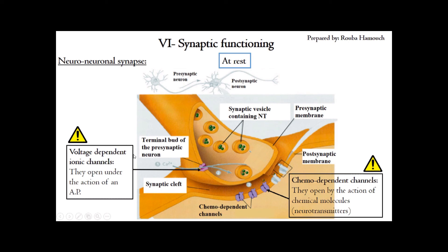We have voltage-dependent ionic channels — mainly Ca²⁺ ion channels — in the pre-synaptic membrane. These are called voltage-dependent because they open under the action of an action potential. When an action potential arrives at the terminal bud of the pre-synaptic neuron, it allows the opening of Ca²⁺ channels and the entry of Ca²⁺ inside the neuron. We will see the role of Ca²⁺ in the transmission of the nervous message. You must study this definition for the official exam.